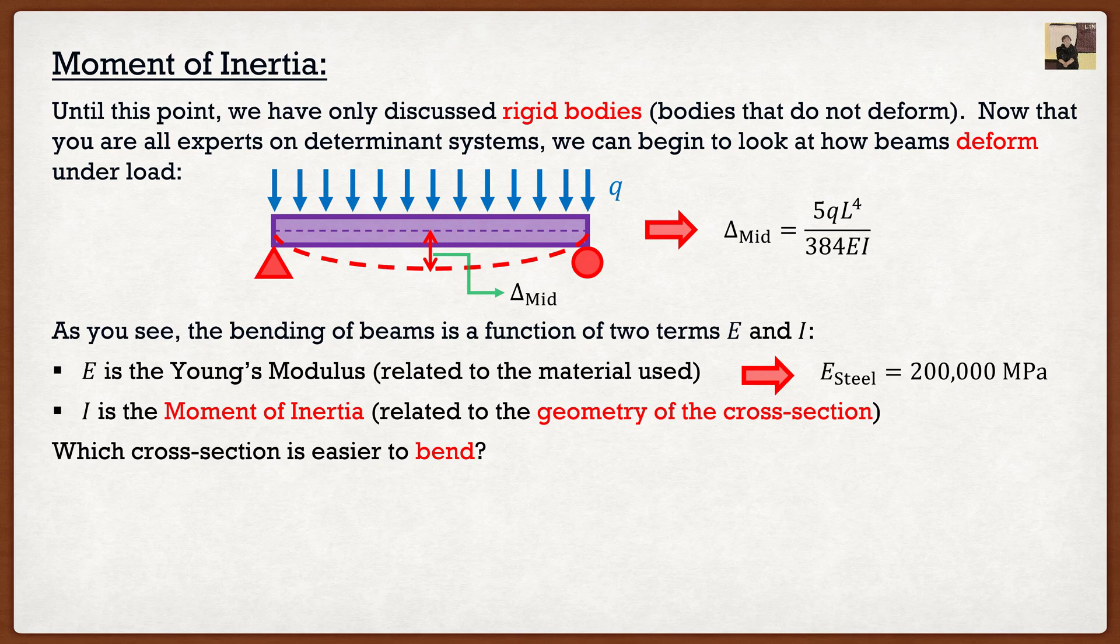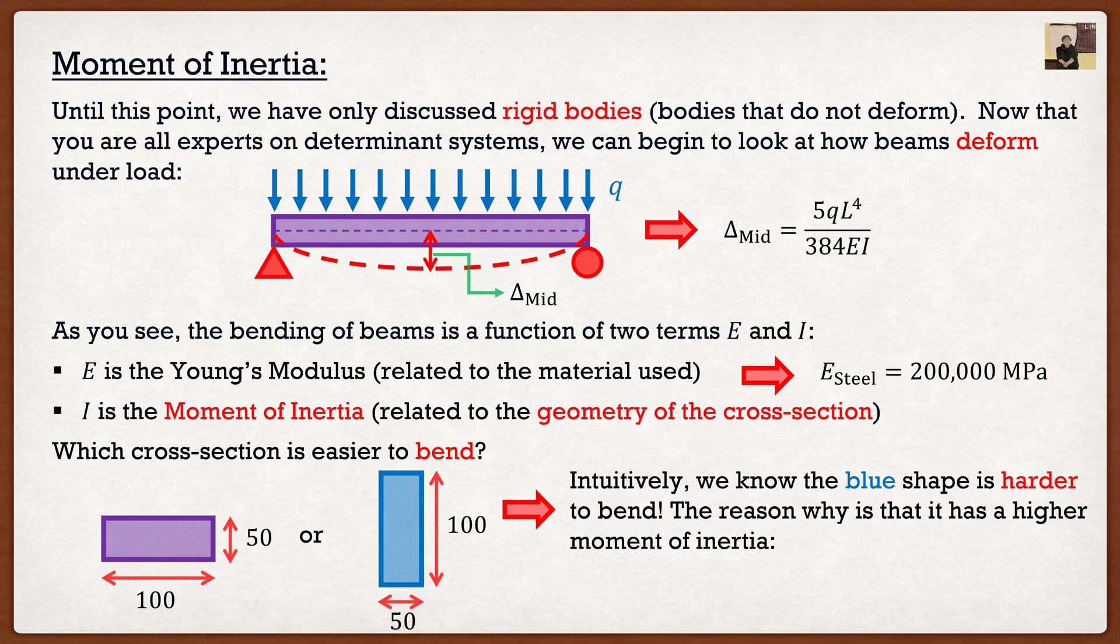So if we were to do a simple example of which one's easier to bend, and I were to have two rectangles, a purple one and a blue one, and again, they have the same dimensions, same length, same material properties, we already know that that blue one is going to be harder to bend. And the reason why is because it's actually going to have a larger moment of inertia.